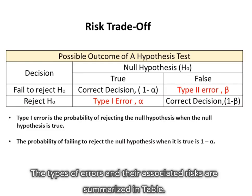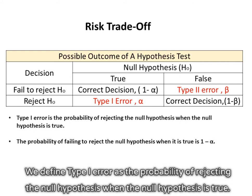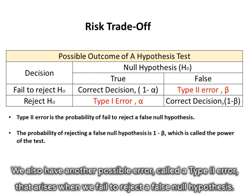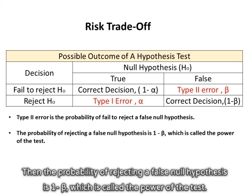The types of errors and their associated risks are summarized in a table. We define type 1 error as the probability of rejecting the null hypothesis when the null hypothesis is true. The probability of failing to reject the null hypothesis when it is true is 1 minus alpha. We also have another possible error, called a type 2 error, that arises when we fail to reject a false null hypothesis. For a particular decision rule, the probability of making such an error when the null hypothesis is false will be denoted as beta. The probability of rejecting a false null hypothesis is 1 minus beta, which is called the power of the test.